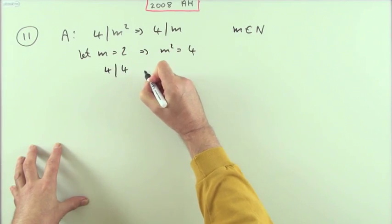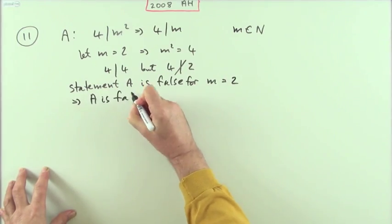Well, it's easy to see in this case that you can disprove it. If you let m equal 2, in which case m squared would equal 4, then yes, 4 divides 4, but 4 does not divide 2. So there's a counterexample. Statement A is false using a counterexample.